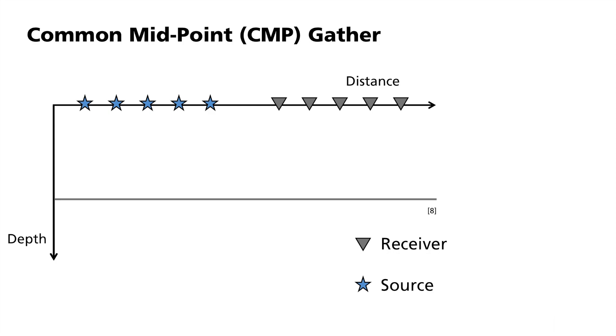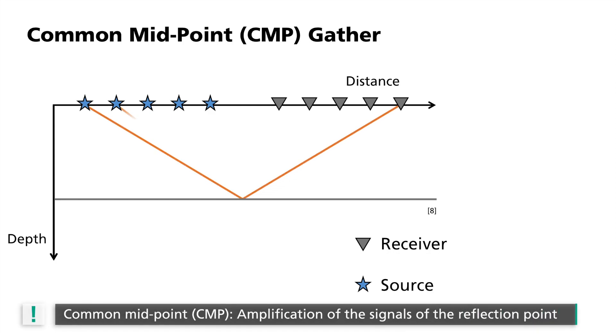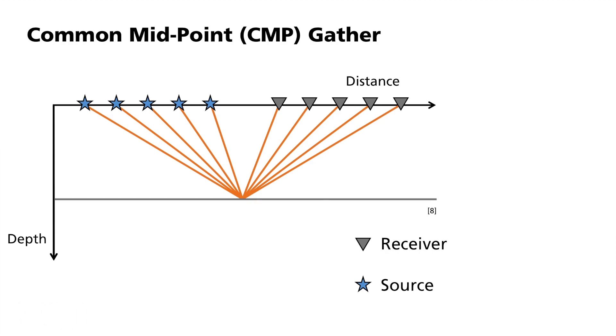In the case of a horizontal reflector in a homogeneous medium, the following applies. All paths are reflected to a common point at a subsurface. This gather makes it particularly easy to amplify signals from this single reflection point and to conceal other effects.